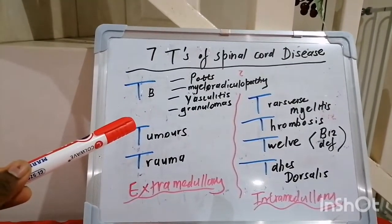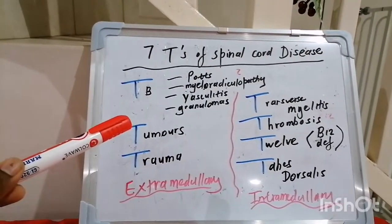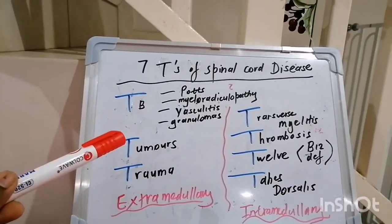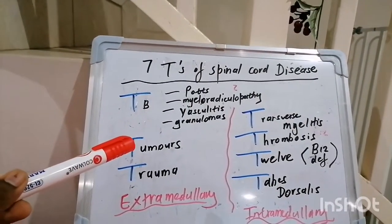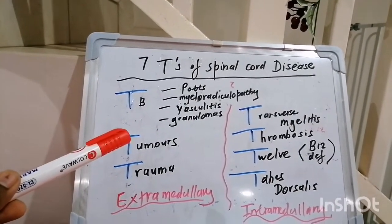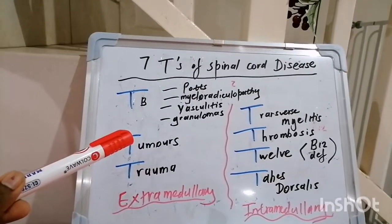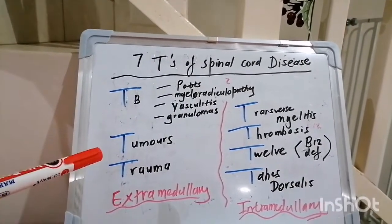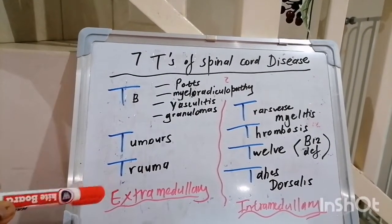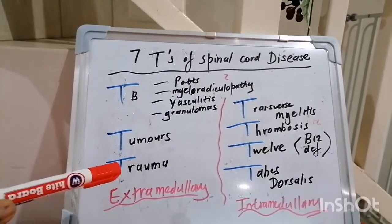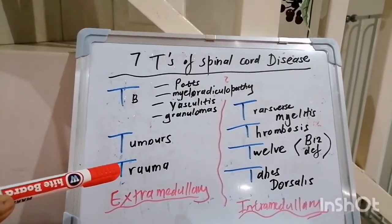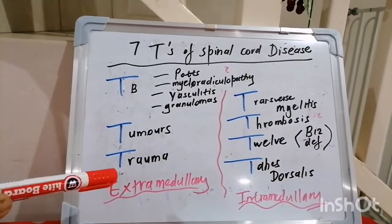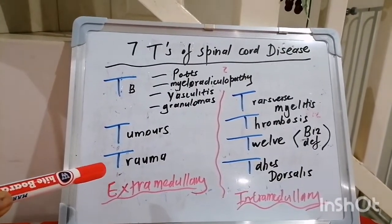Tumors as well can affect the spine — a whole variety of them, like meningiomas, neurofibromas, lymphomas, leukemia, myeloma, etc. Spinal cord trauma can also occur, and usually this depends on the tracts which are involved, typically giving you a Brown-Séquard syndrome in hemisection of the cord.